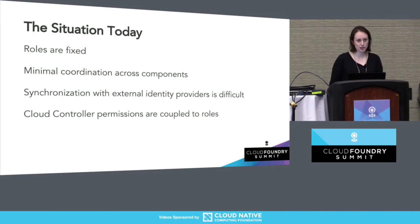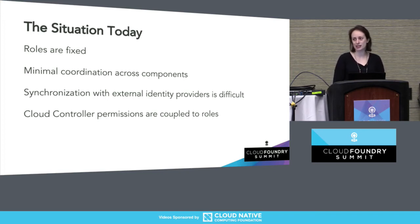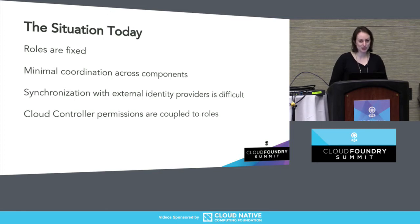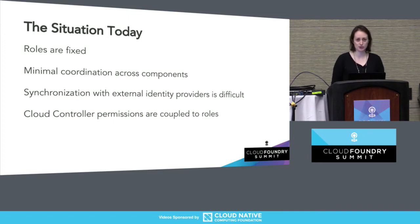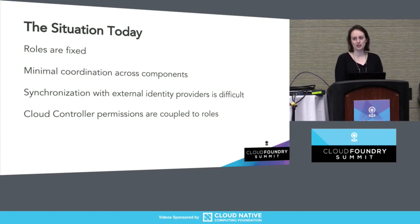There's also minimal coordination or centralization across components. There's no easy way of saying you want your space developers to also have access to a set of credentials in CredHub — that today is a very manual process. Same thing with managing Bosch teams, which is a fairly new feature. Synchronization with external identity providers is also pretty difficult. There are various tools, some open source, some not, but most people end up having to roll their own solution. That means every time someone transfers teams or joins the company, you need to give them all the right permissions — and same thing when they leave, which is maybe less frustrating to employees but more important from a security perspective. Also, Cloud Controller permissions are really tightly coupled to roles. If a different Cloud Foundry component or app wanted to check whether a user could push an app or see credentials, you'd have to ask: are they a space developer? Are they a global admin? Are they an org manager? — rather than just asking: can this person push an app?